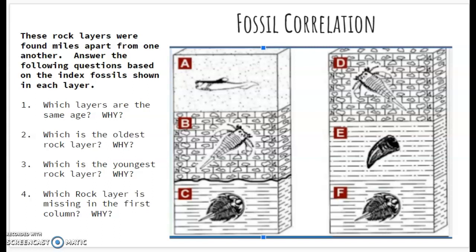So the first question asks, which layers are the same age? The reason we know the layers are the same age is because they have the same index fossil. So the correct answers would be letter C and letter F are the same age, and so are letter B and letter D. And why? Because they contain the same index fossils.